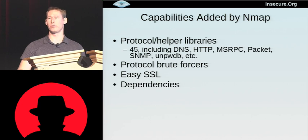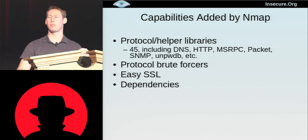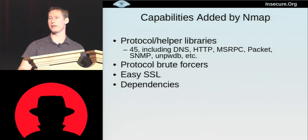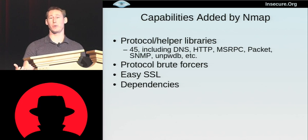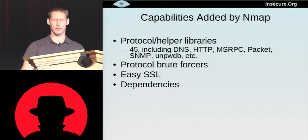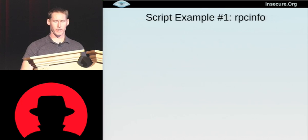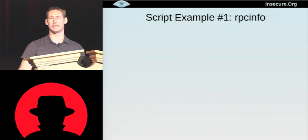We have protocol brute forcers. One problem you sometimes have is you write a nice script that exercises a certain protocol on your target machine, but it requires a username and password. With our brute forcers, you can more efficiently discover that username and password so your script can continue. We have SSL, as already mentioned, and we have a dependency system — so if we scan and do SMB enum users, if we had also done SMB brute, it would make sure the username script runs first and uses those usernames to brute force the passwords.